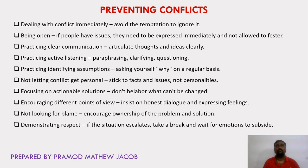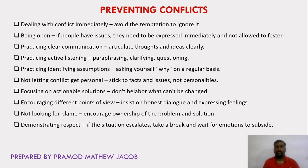Next is don't blame anyone. Don't look for blaming others. Always encourage ownership of the problem and solution. If one particular problem is solved by another person, we have to encourage that person and give ownership of the solution to them. For example, if a person called A solved a problem, we have to openly accept the fact that the problem is solved by person A. That is what is called giving ownership of the solution to a particular person.